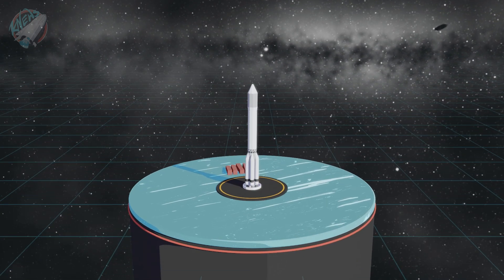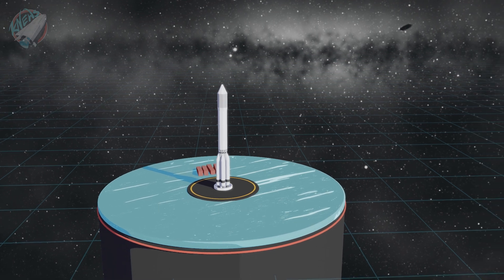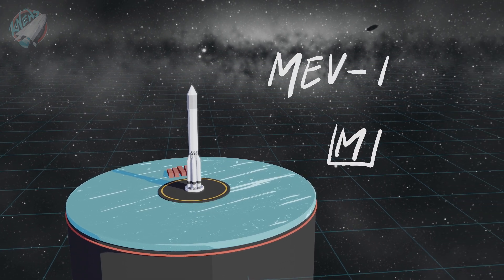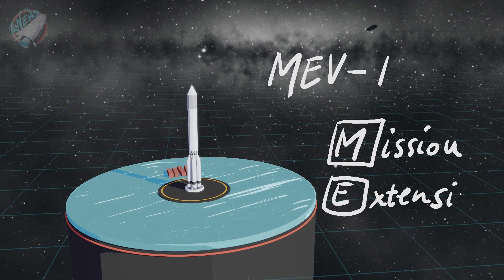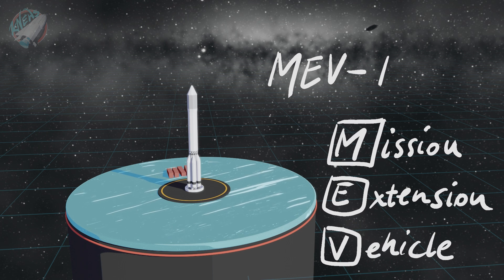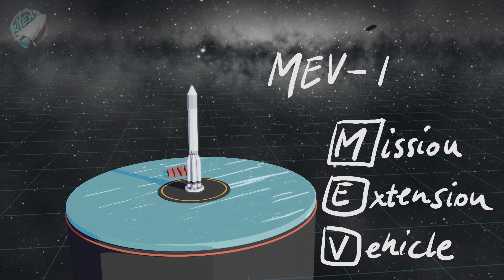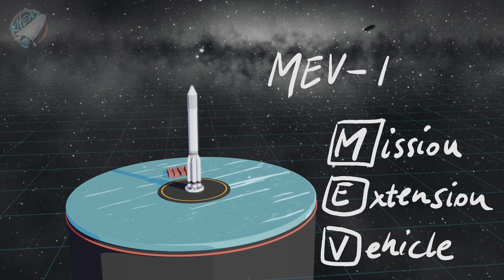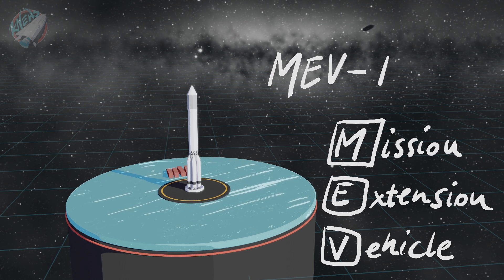Today we are going to discuss an upcoming mission on a Russian Proton rocket. The MF-1 or mission extension vehicle which is being launched for the American company Northrop Grumman. Mission extension means it is going to dock to another satellite that ran out of fuel to extend its mission duration. Pretty cool.